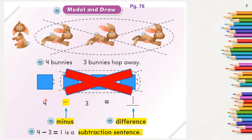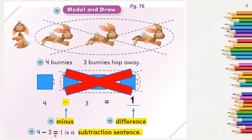So we write the subtraction sentence: four minus three equals one. The answer to the subtraction problem is called the difference — one is the difference. This dash symbol is called minus. The whole sentence 'four minus three equals one' is called a subtraction sentence.